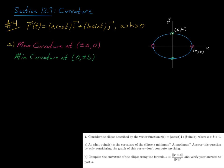So we note that here, max curvature at plus or minus a comma zero, and minimum curvature at zero comma plus or minus b.